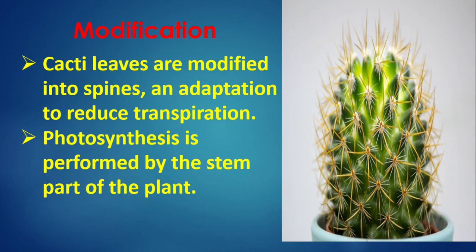Modification example: Cacti leaves are modified into spines as an adaptation to reduce transpiration. Photosynthesis is performed by the stem part of the cactus plant.